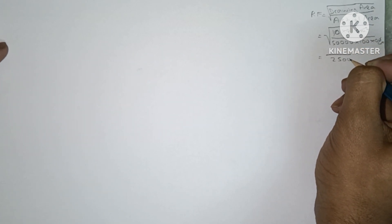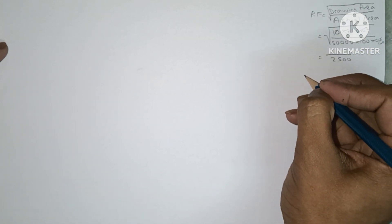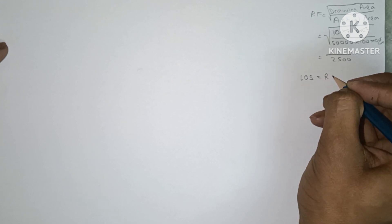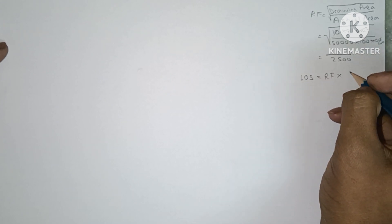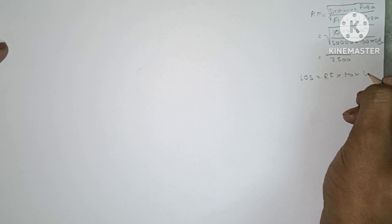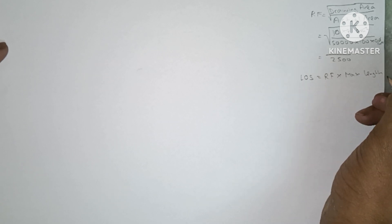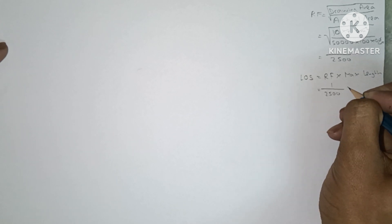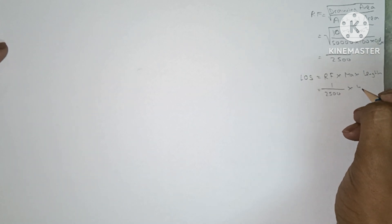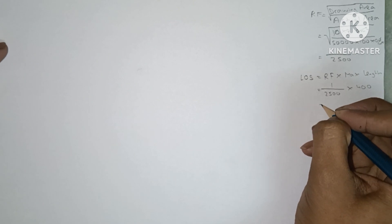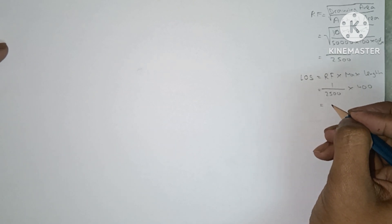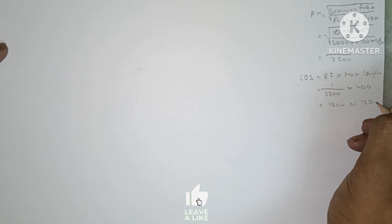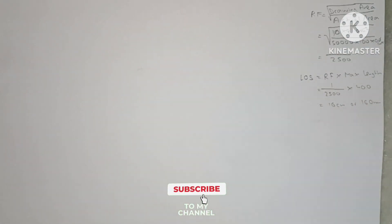Now we calculate the Length of Scale. Length of scale equals RF multiplied by maximum length. The question states the maximum length is 400 meters, so we multiply 1/2500 by 400, giving us 16 centimeters or 160 millimeters. So the length of the scale will be 16 centimeters.